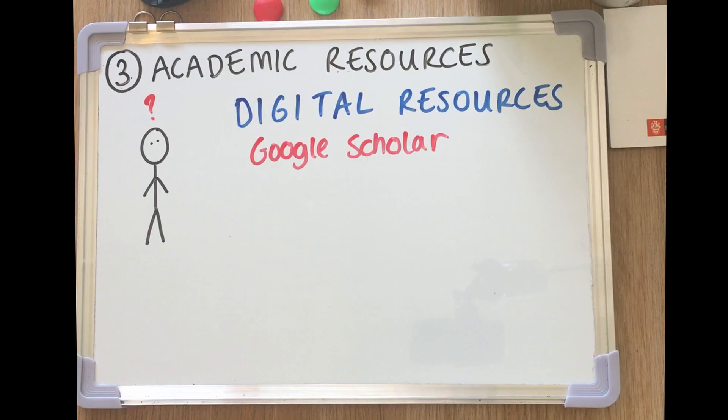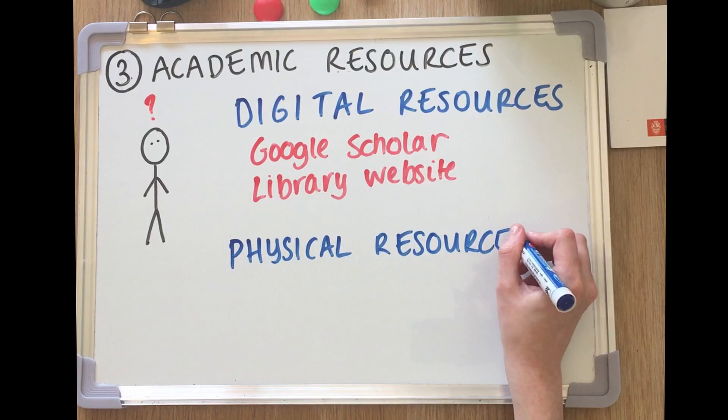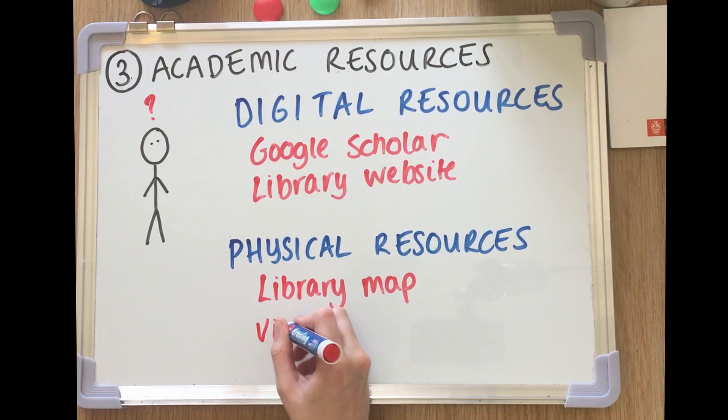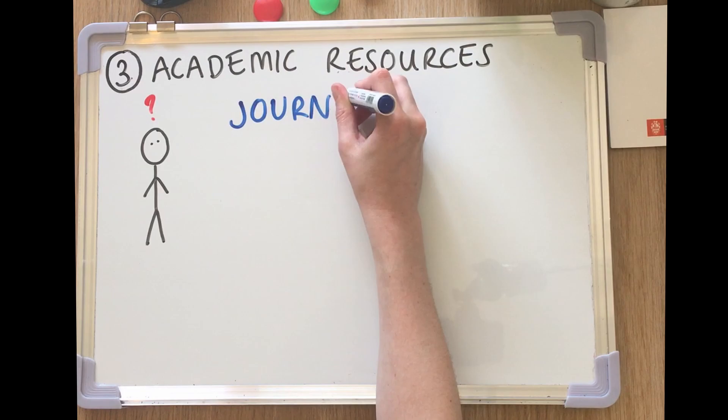Get used to using online search engines for academic resources such as Google Scholar or your school library website. You may also be able to access physical resources, use a library map to find relevant content, and you may be able to get a day pass to visit a local university library.